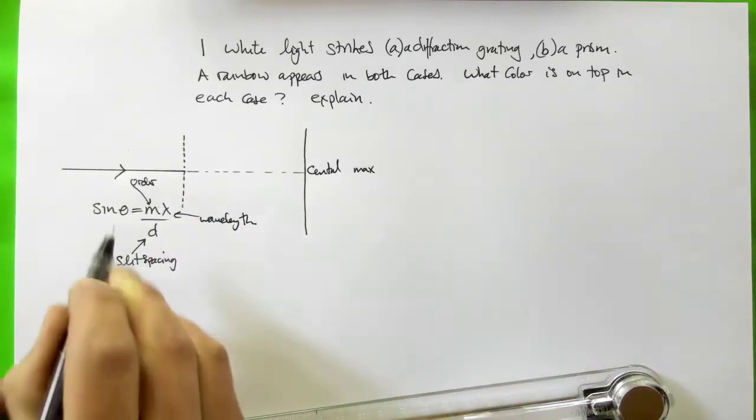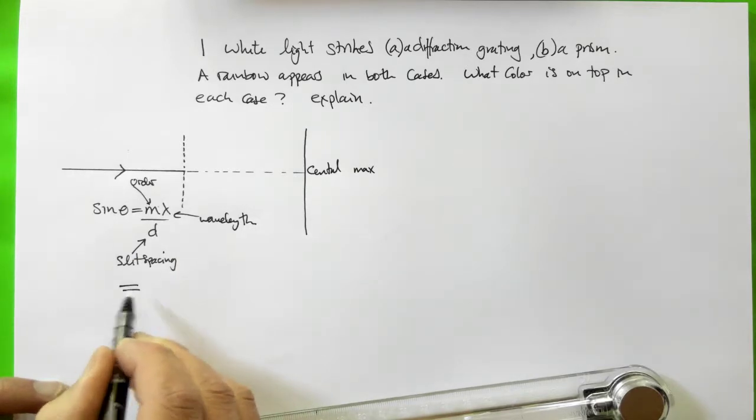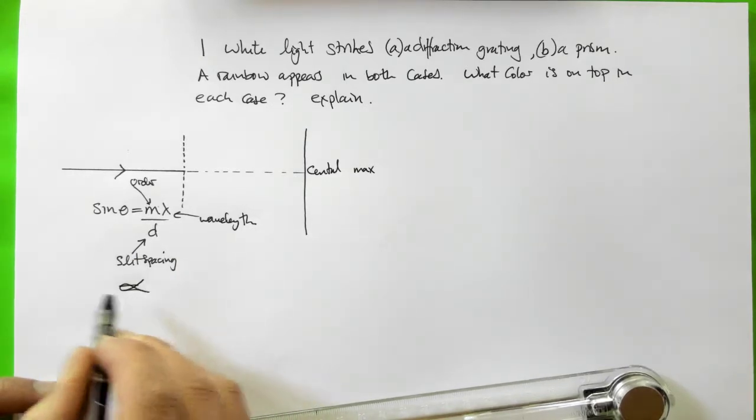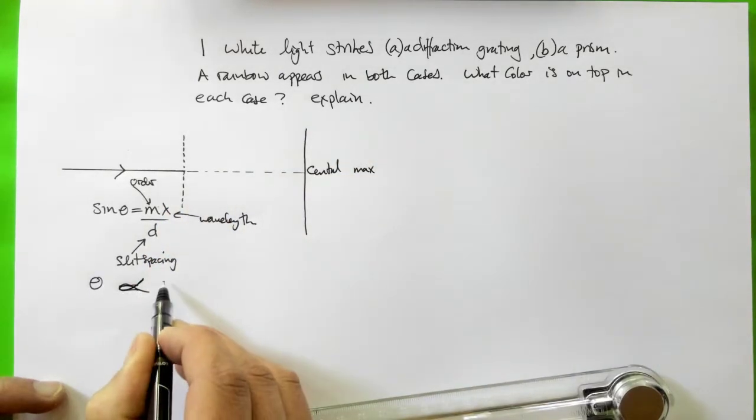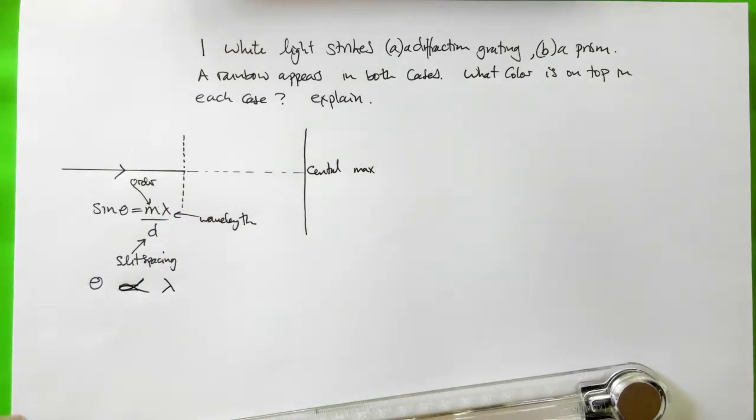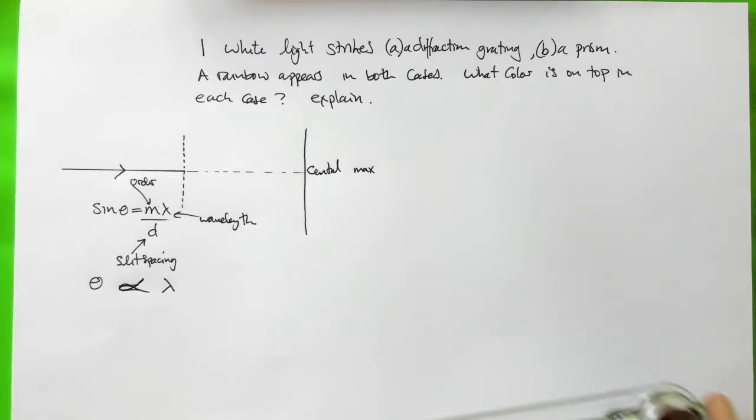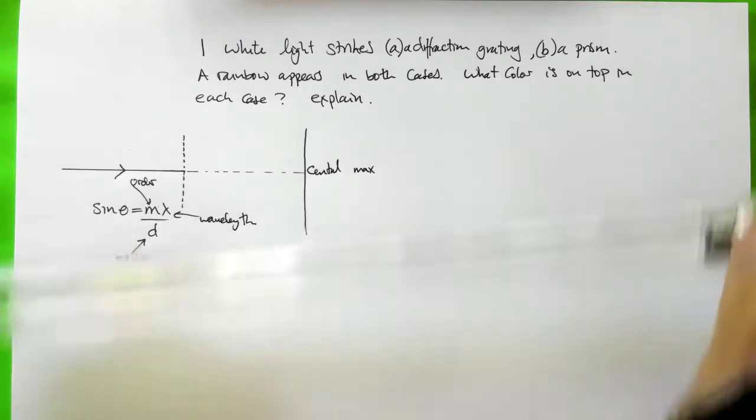So if we want to reduce this to something really simple, we can say that approximately theta, the angle that the light gets diffracted through, is proportional to lambda the wavelength. So longer wavelengths get bent by a larger angle, smaller wavelengths get bent by a smaller angle.